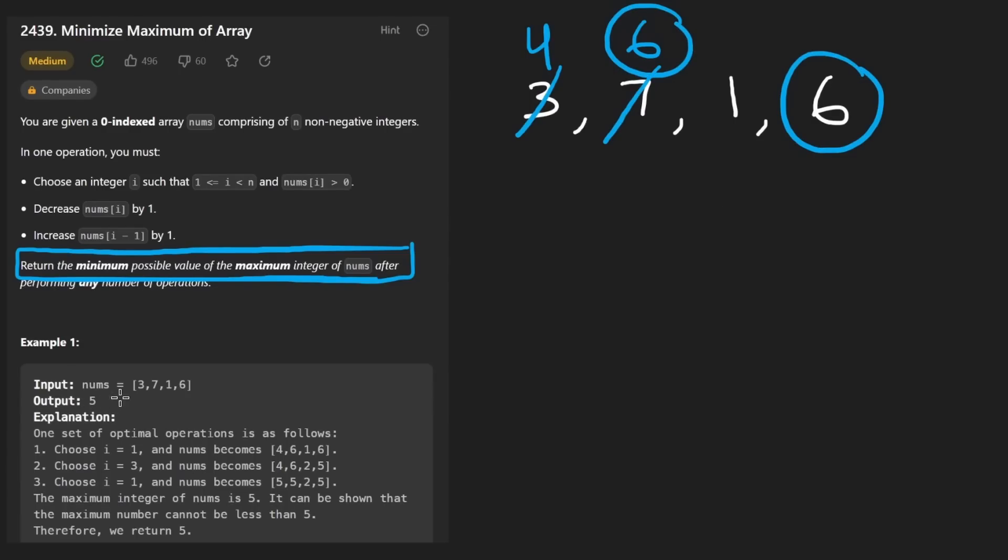But we can actually do better. You can see in the output over here, the result is actually five. How exactly would we get to that point? Well, you kind of have to prioritize by taking the maximums and decreasing them, as you would guess. By decreasing this, we're not going to get anywhere. So for this guy, let's decrement it one more time. Let's now say it's going to be a five. I'll write it down over here. And this guy is now going to be a five. We took two from here and moved it to the left.